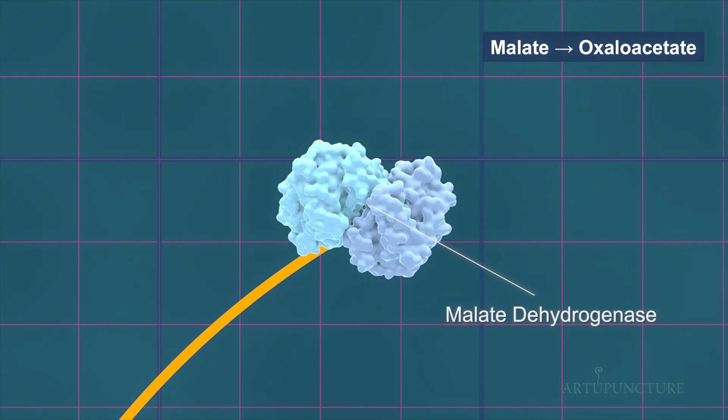Malate dehydrogenase catalyzes the oxidation of L-malate to oxaloacetate, with NAD being reduced to NADH in the process. Vitamin B3 is crucial for the structure and function of NADH.